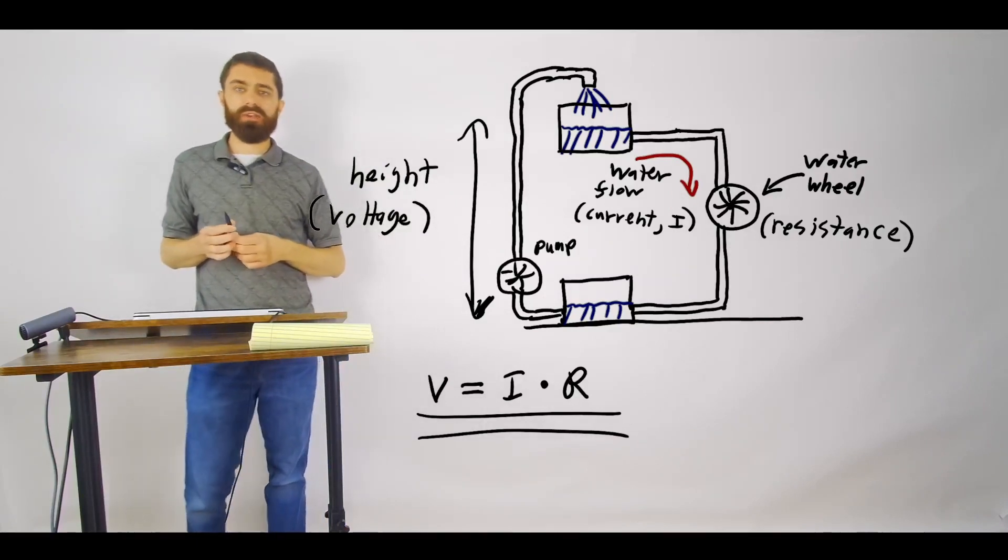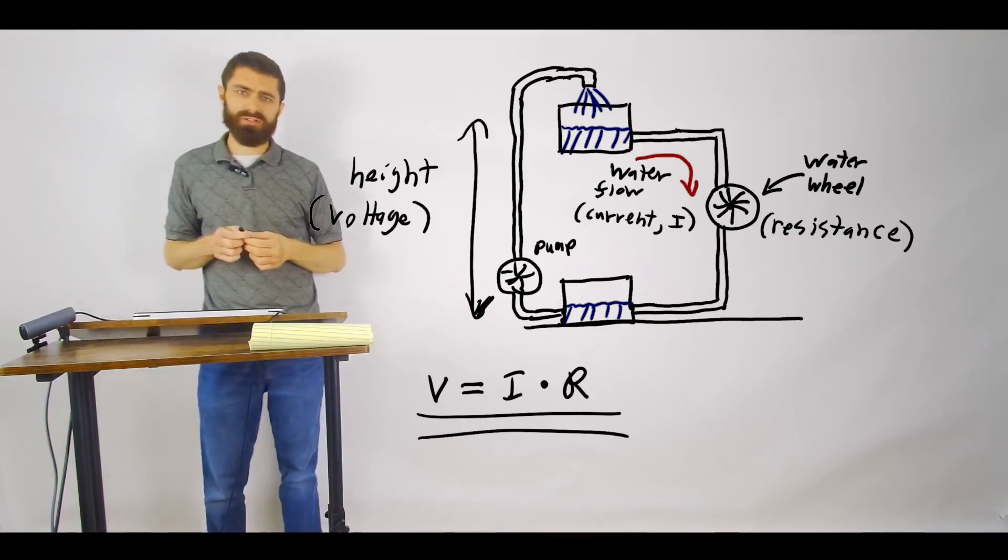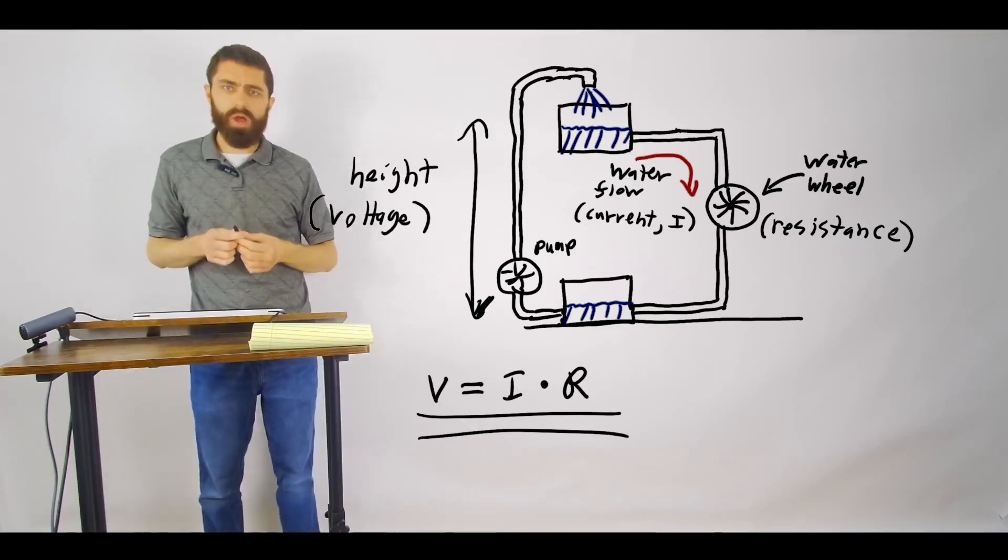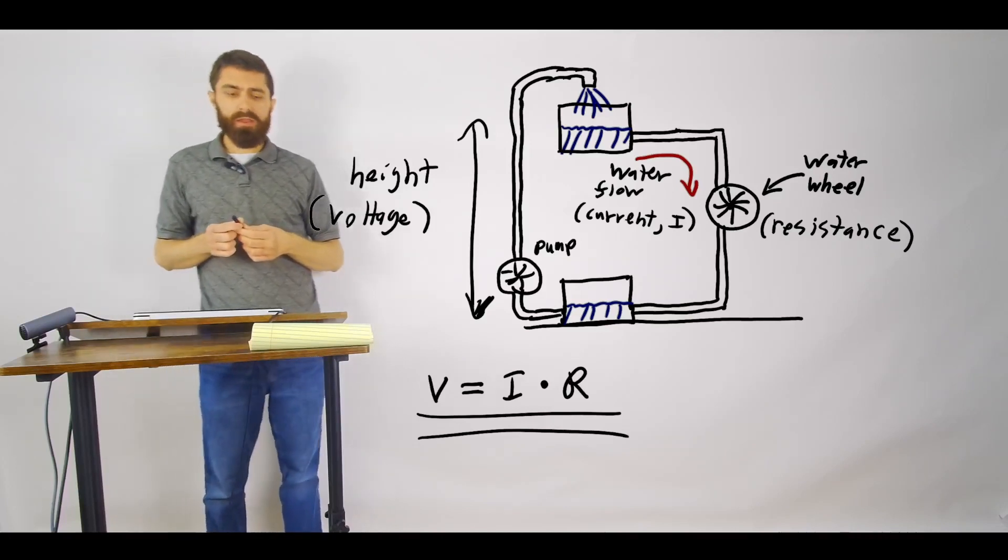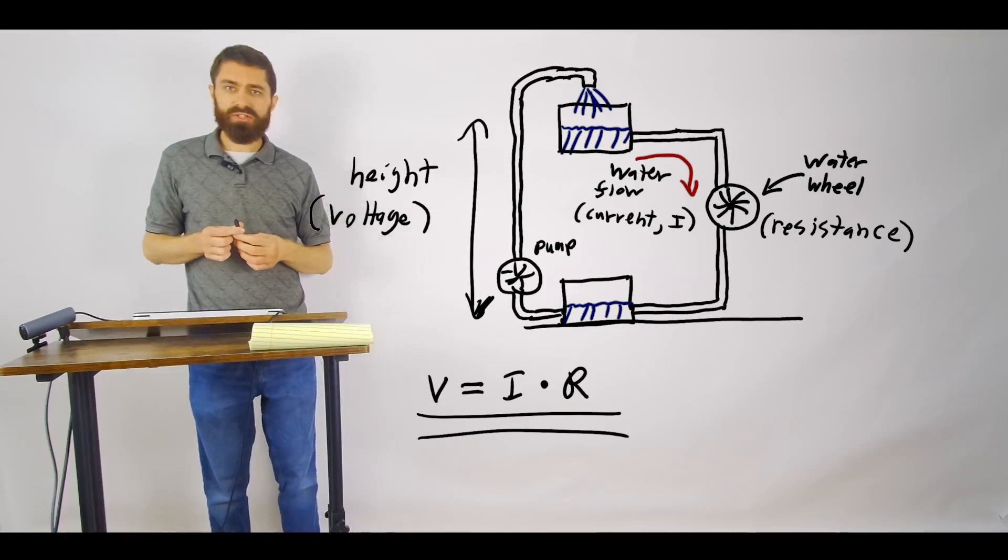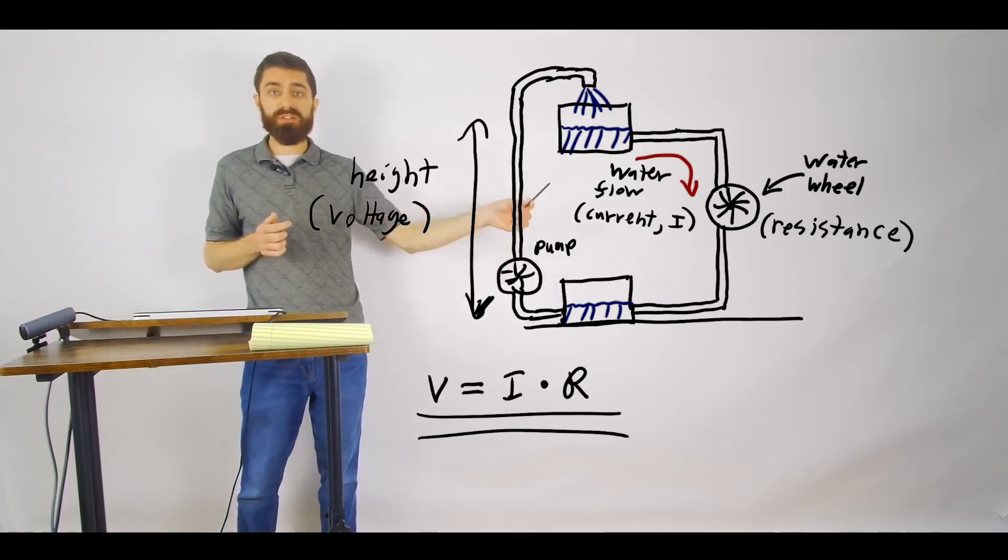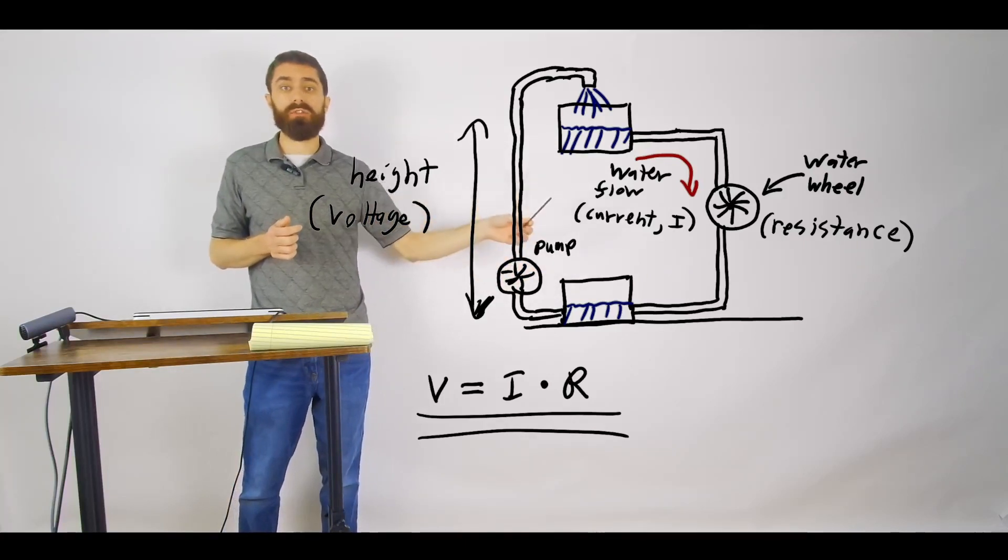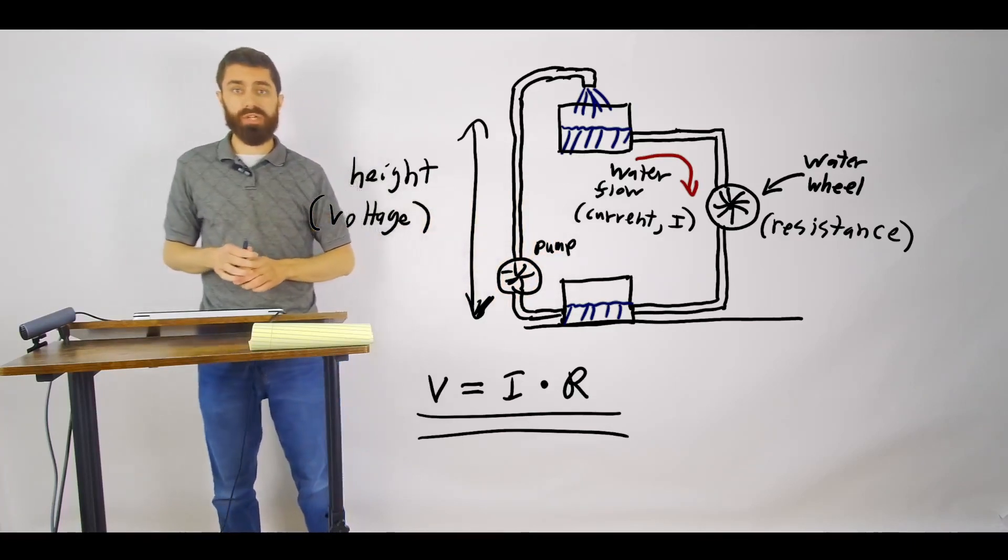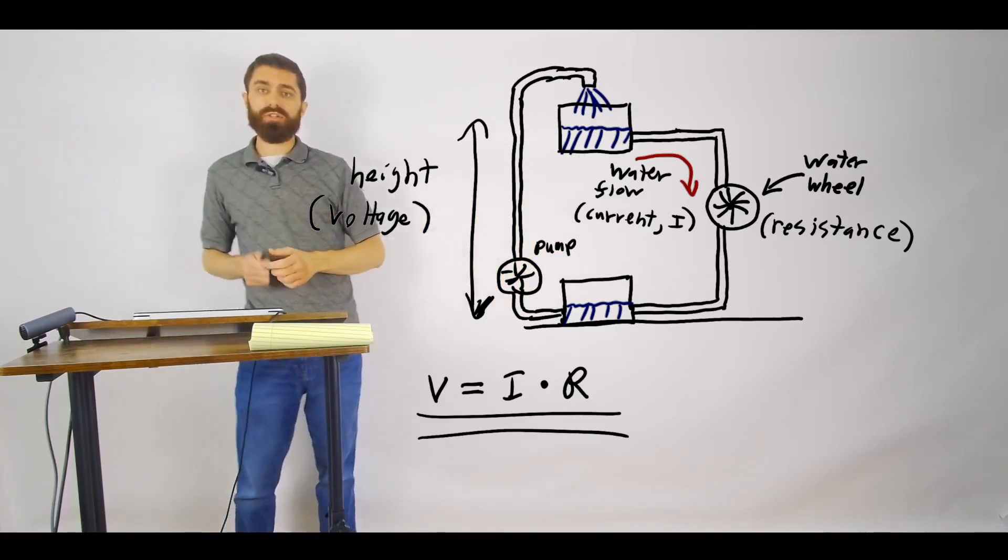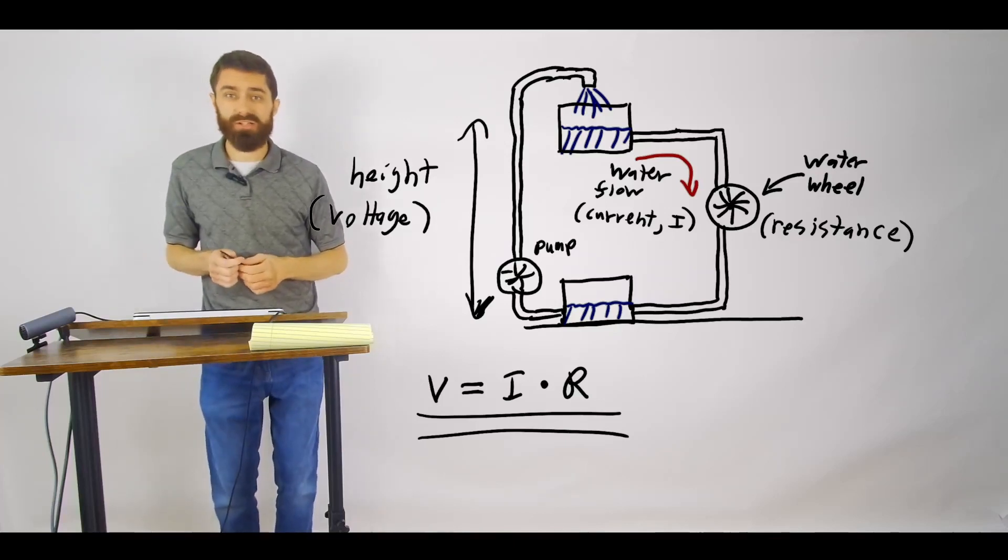So it turns out that a very similar thing happens in electric circuits, only instead of water we're moving electrical charges, namely electrons. So how do you get electrons to flow? In a very similar way, in a way that's very similar to how we're getting the water to flow here. We're getting the water to flow through a difference in gravitational potential energy. In electric circuits, we get the water to flow through a difference in electric potential energy.